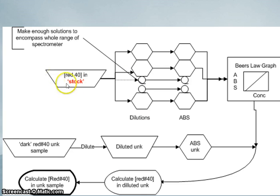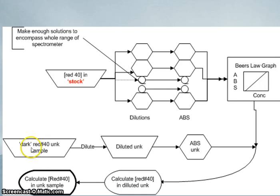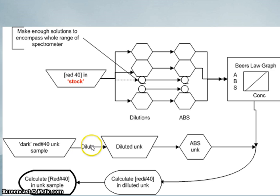One more time in review: we make a series of solutions of known concentration by diluting a stock solution, measure the absorbance of each, and find the linear relationship between absorbance and concentration. Our soda sample is diluted; we take the absorbance of that diluted soda sample, use the mathematical relationship to get its concentration. Knowing how much we diluted by and the volume of soda we put in, we back-calculate the concentration of Red Number 40 in the original soda sample. Good luck!